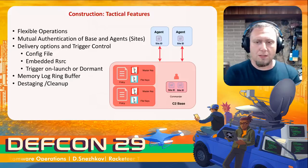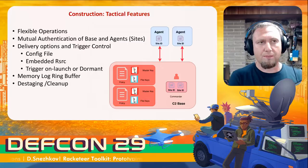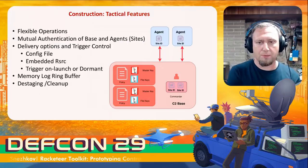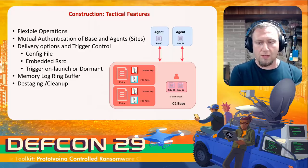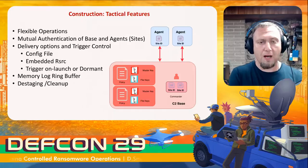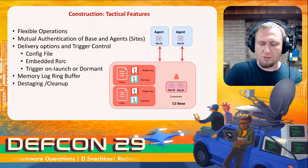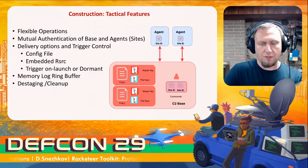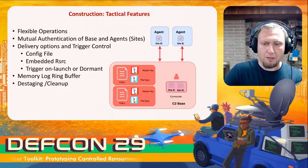On stealth versus transparency: one problem in ransomware is not knowing what's going on once agents are deployed. We run in-memory logs on the agent that we can retrieve and introspect to get optics on what's happening. One key feature for testing is the ability to clean up after ourselves — killing the agent, popping notifications, and removing the threat from the network on its own.